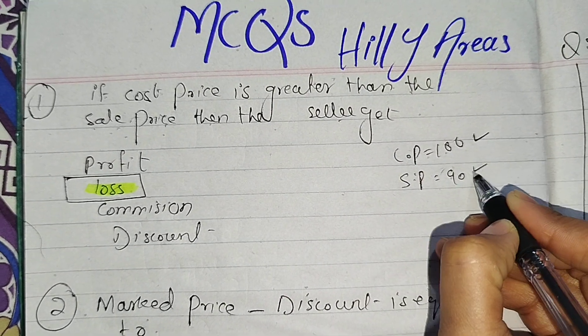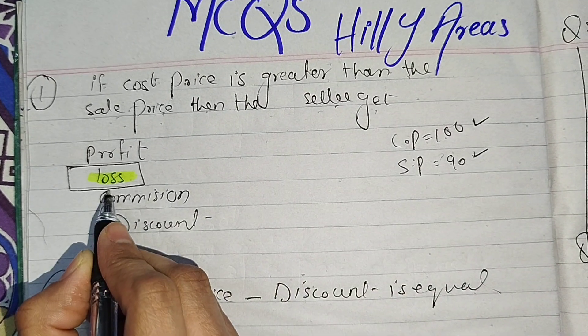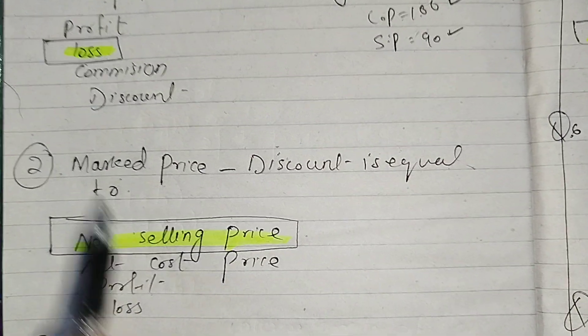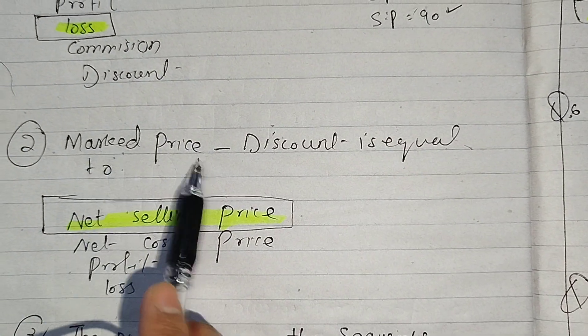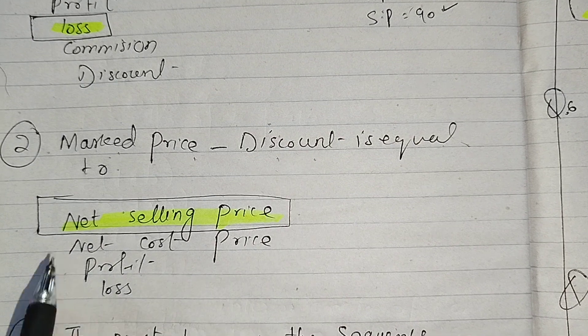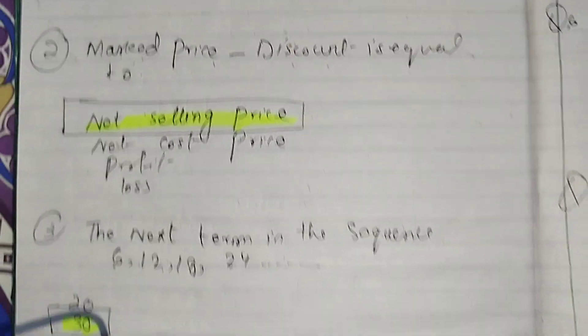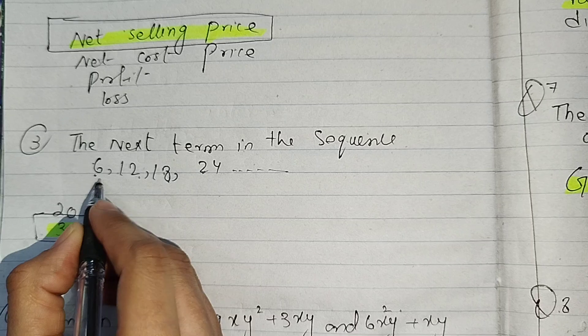Next, the formula is marked price minus discount, which formula is the net selling price. Next blank, the next term is the sequence.